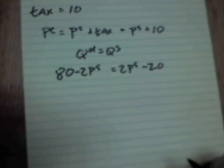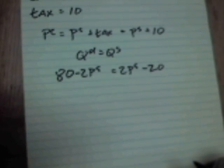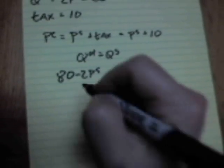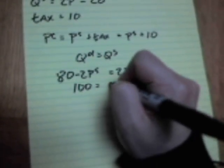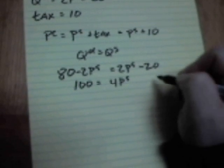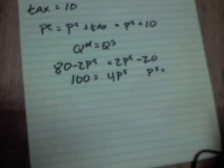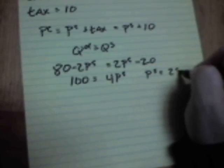Take the 20 to the other side. 100 minus 2PS equals 2PS. Take your 2PS to the other side. 100 is equal to 4 times the price producers get to keep. Dividing side by 4, price producers get to keep is 100 divided by 4, or 25.